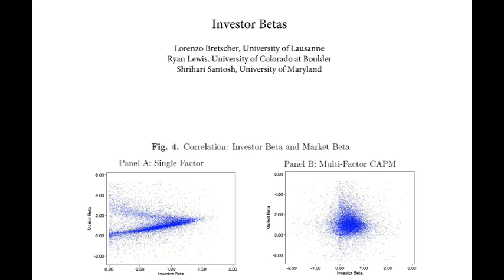And then I have them take it to the data — we've all seen this picture before. My students generated this particular one. I have them plot beta-sorted portfolios against actual returns. CAPM predicts everything should be on that orange line, but you end up with a pretty flat line.